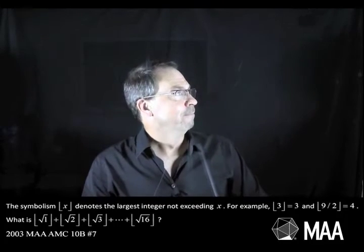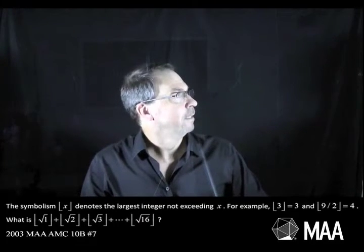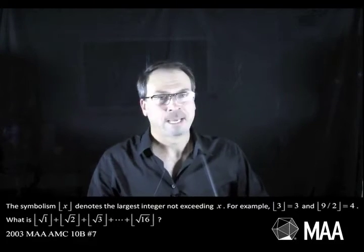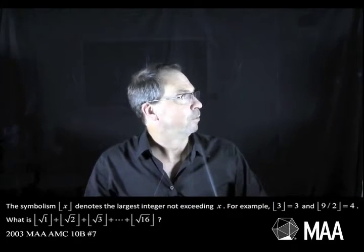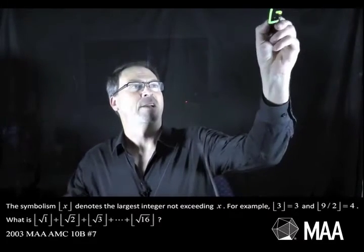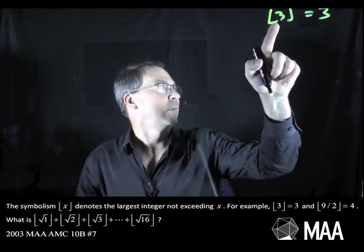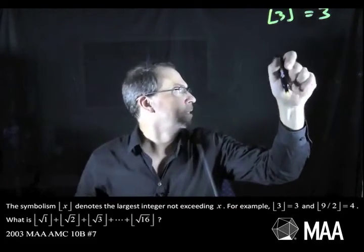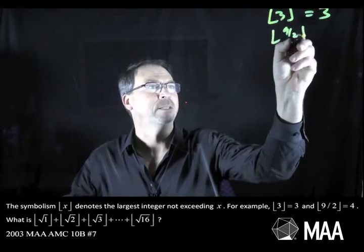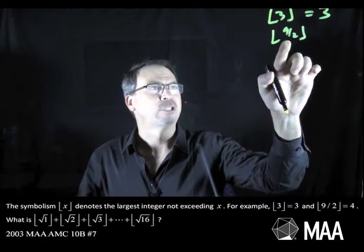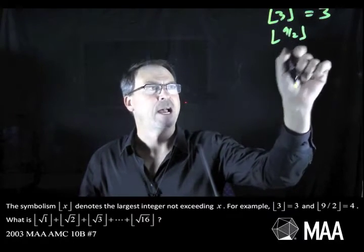The symbolism funny brackets x denotes the largest integer not exceeding x. For example, the funny bracket 3 of 3 apparently is 3. The largest integer not bigger than 3, I agree, is 3. And the other example they give is 9 halves, 4 and a half. The largest integer not bigger than 4 and a half is indeed 4.